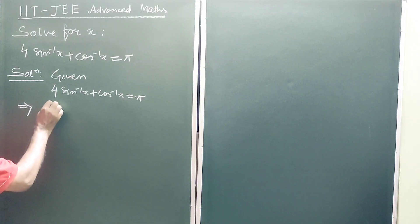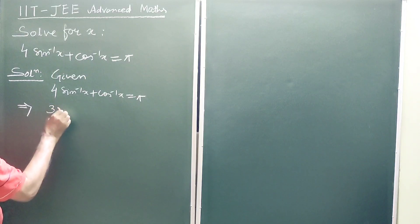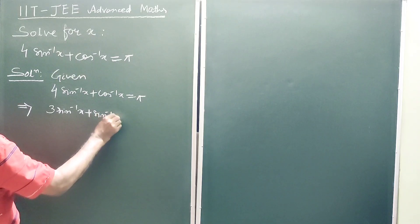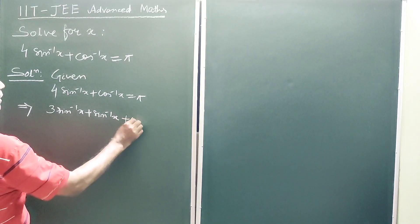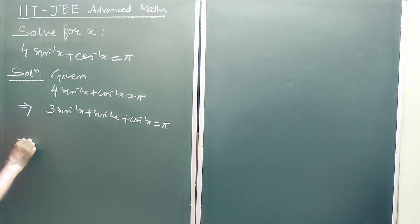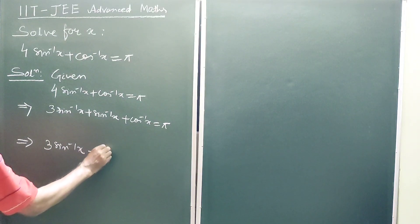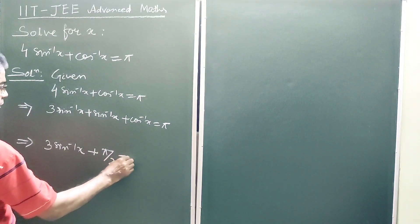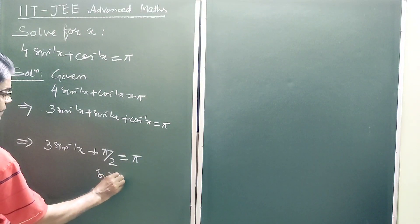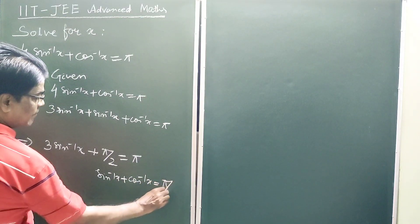This implies 3·sin⁻¹(x) + (sin⁻¹(x) + cos⁻¹(x)) is equal to π, which implies 3·sin⁻¹(x) + π/2 is equal to π, since sin⁻¹(x) + cos⁻¹(x) is equal to π/2.